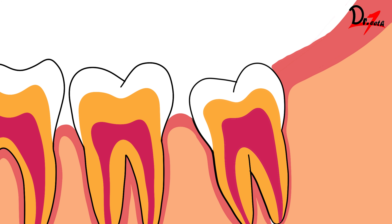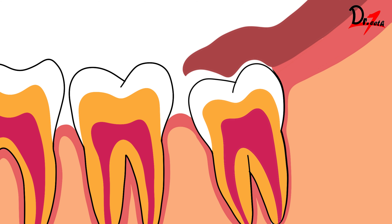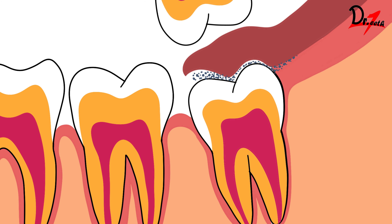Pericoronitis happens whenever we have a partially erupted third molar. If the person is in their twenties, up to 25, it could be temporary because the tooth is still erupting. When it is at a partial eruption stage, it is partially covered by the gingiva. As you can see in this picture, we have a partially impacted tooth covered on the distal side by the gingiva. Because of food accumulation, there can be infection in this gingival region causing pain and swelling.